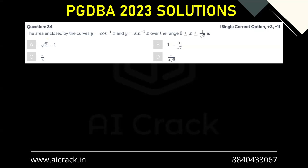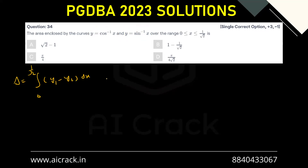Let's solve question number 34. The area enclosed by the curves y = cos⁻¹x and y = sin⁻¹x over the range x ∈ [0, 1/√2]. So we have delta equals the area, that is integral from 0 to 1/√2 of (y1 minus y2) dx. Now y1 is preferably cos⁻¹x and y2 is preferably sin⁻¹x, because cos⁻¹x is bigger than sin⁻¹x in this range of x. So this can be written as integral from 0 to 1/√2 of (cos⁻¹x minus sin⁻¹x) dx.